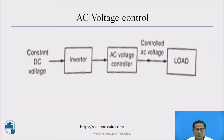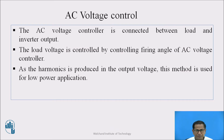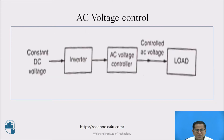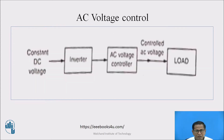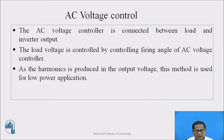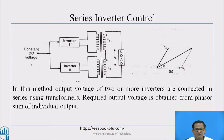This is the block diagram of the AC voltage control. Here the input is constant DC and the load requires controlled AC voltage. The AC voltage controller is connected between the inverter and the load. The load voltage is controlled by controlling the firing angle of the AC voltage controller. As harmonics are produced in the output voltage, this method is used only for low power applications.